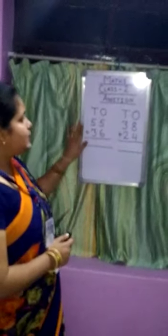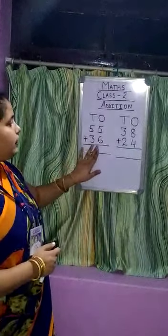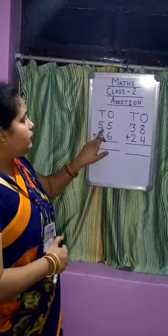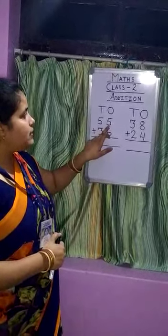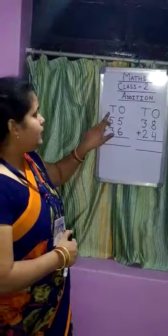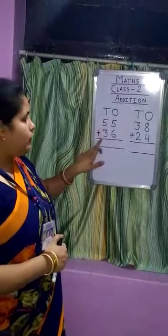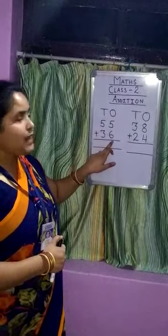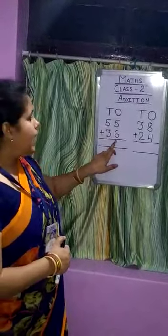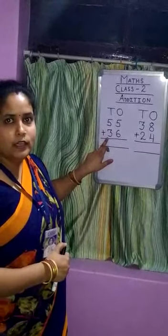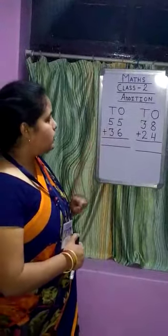Our first example is 55 plus 36. In the number 55, 5 is in the ones place and the other 5 is in the tens place. In the number 36, 6 is in the ones place and 3 is in the tens place. Now we will start addition.